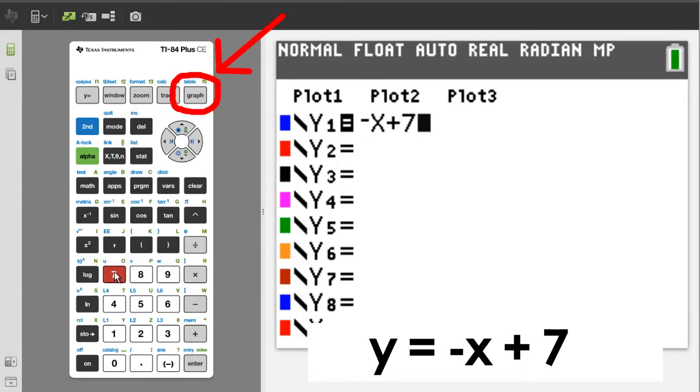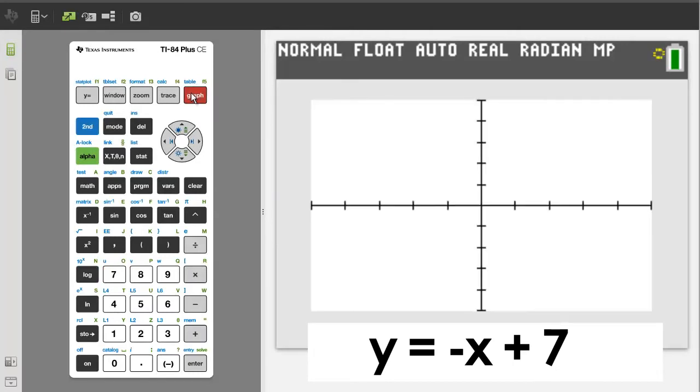Then press the graph button to graph this line. Sometimes you need to adjust the graphing window to see where your graph of a line crosses the x and y axis. In this graph we cannot see that.